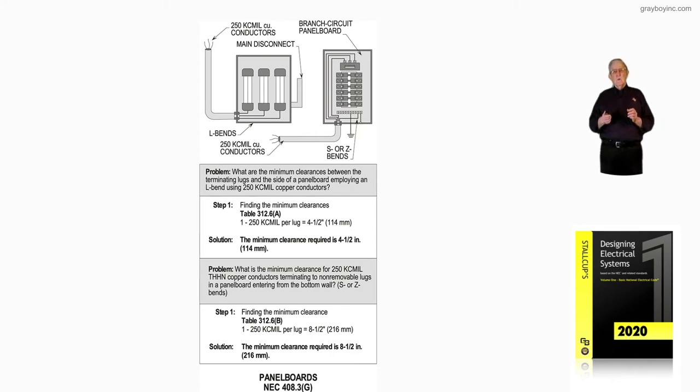So let's take a look at what space is required based upon how you bend those conductors: L-bend, Z-bend, or S-bend.